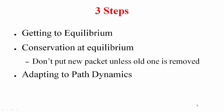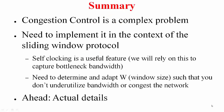The solution approach follows three steps: first, getting to equilibrium by filling up the pipe; second, conservation at equilibrium — not injecting new packets until old ones leave; and third, adapting to path dynamics such as a varying bandwidth-delay product. To summarize, congestion control is a complex problem implemented in the sliding window protocol context. Self-clocking is a key feature for capturing bottleneck bandwidth, and we must adapt the window size to avoid both under-utilizing bandwidth and congesting the network.